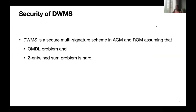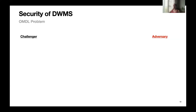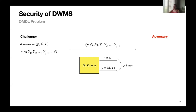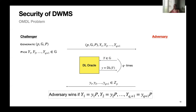We show that DWMS is a secure multi-signature scheme in the algebraic group model and the random oracle model, assuming that the One-More Discrete Logarithm (OMDL) problem is hard and the M-Entwine-Sum problem is hard. In the OMDL problem, the challenger generates a group structure, picks Q+1 group elements, and sends them to the adversary. The adversary has access to a discrete logarithm oracle (at most Q queries), and wins if it outputs the discrete logarithms of all Q+1 challenges.